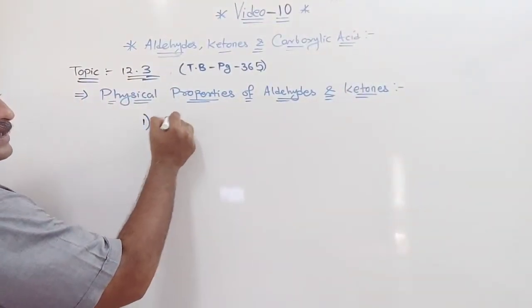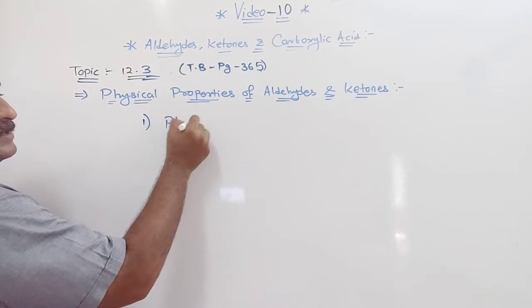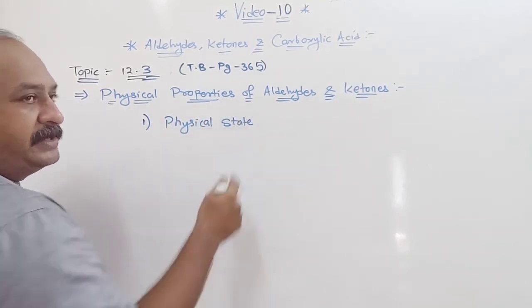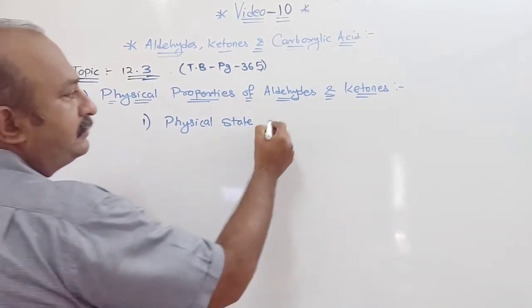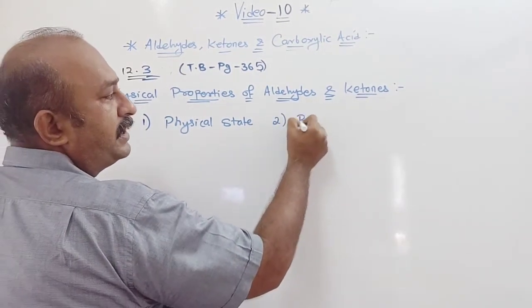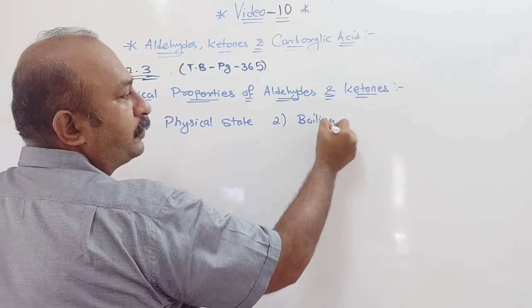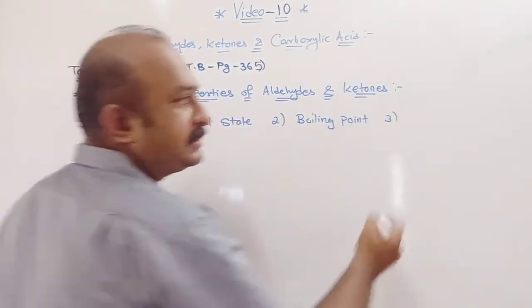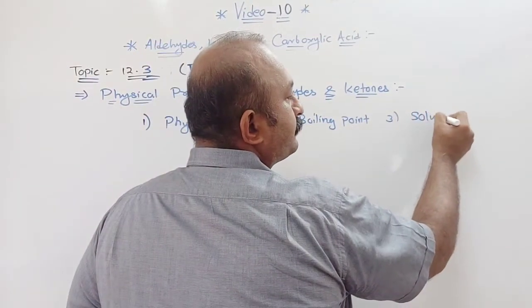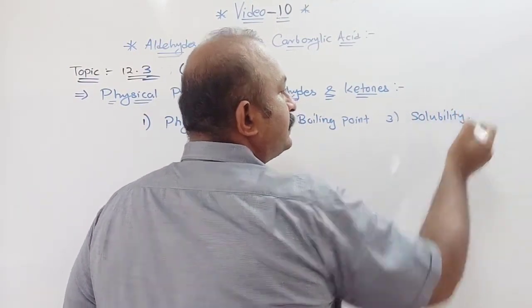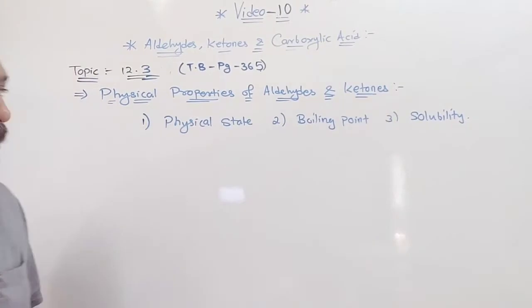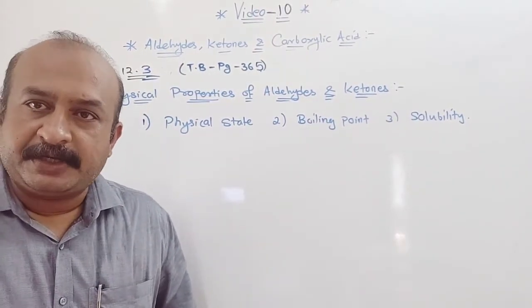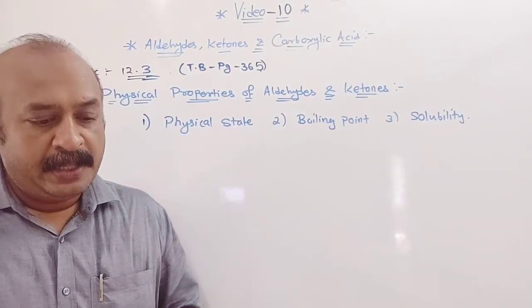The first one we are going to discuss is about physical state — physical state means solid, liquid and gas. Second, we are going to discuss boiling point, and the third is solubility. These three aspects we are going to discuss in our topic: physical properties of aldehydes, ketones and carboxylic acid.